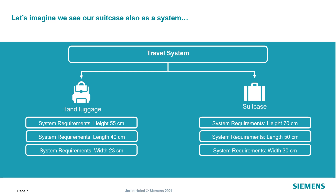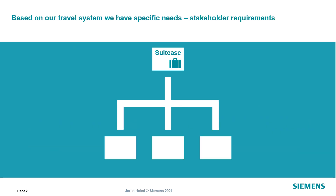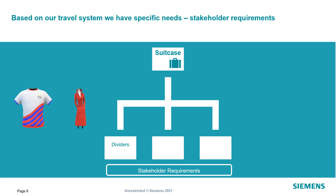So when we take these criteria as our system requirements, then we can start to build a first small model. And based on this model and these system artifacts, we can then also add specific needs — so specific stakeholder requirements. So for my suitcase, for example, I would like to have some dividers, just because I don't want to put my lovely red dress between my sport clothes.